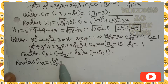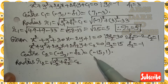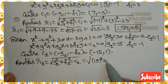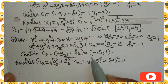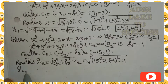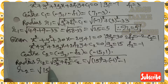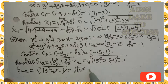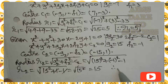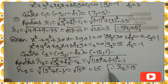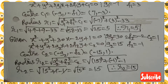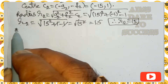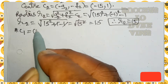Radius r₂ = √(g₂² + f₂² - c₂) = √(15² + (-1)² - 1) = √(225 + 1 - 1) = √225 = 15. So r₂ = 15. We now have: center C₁ = (7, -3) with radius r₁ = 5, and center C₂ = (-15, 1) with radius r₂ = 15.